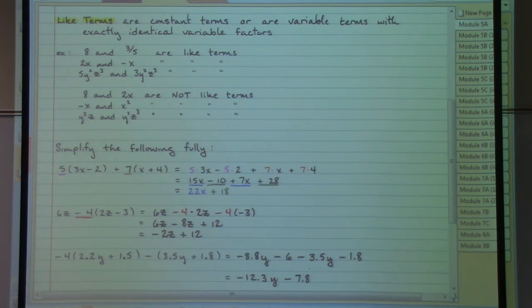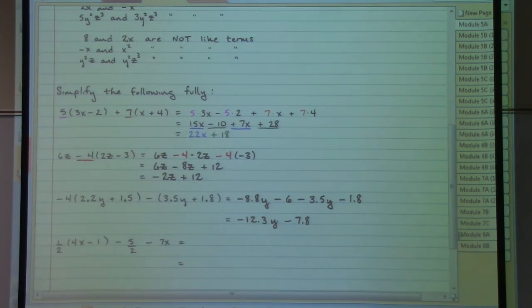Other than integers and decimals, we could have fractions show up as well. Just to prepare you for that possibility, it's the same basic procedures: distributing, combining like terms. The calculator can help you out along the way. Distributing the 1.5: 1.5 times 4x gives us 2x, 1.5 times negative 1 gives us negative 1.5. That's the only distributing we have to do, so we copy down the other terms. Then look for like terms: x's with x's means 2x minus 7x gives us negative 5x.